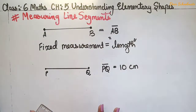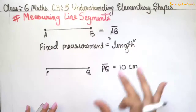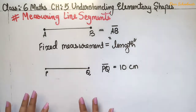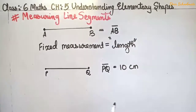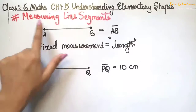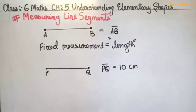The fixed measurement of PQ is 10 cm. We measure the length of the line segment. In this video we will discuss the methods we use to measure line segments. What is the first method to measure a line segment?